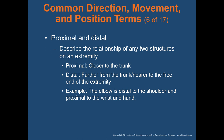Proximal and distal describe the relationship of two structures on an extremity. Proximal refers to something being closer to the trunk of the body. Distal means further from the trunk — a good way to remember it is that distal is distant. For example, the elbow is distal to the shoulder, but proximal to the wrist and hand. My hand is distal to my elbow — further from the trunk — versus proximal, which means closer to the trunk.